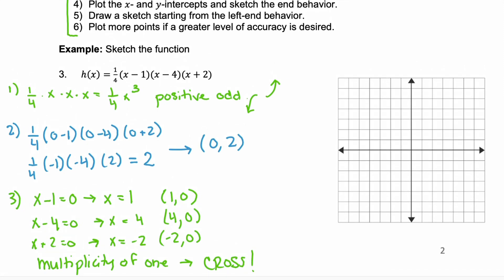Step four. We plot those x and y-intercepts. Let's plot the y-intercept first. There, it's (0, 2). Plot our x-intercepts. (1, 0), (4, 0) and (-2, 0).